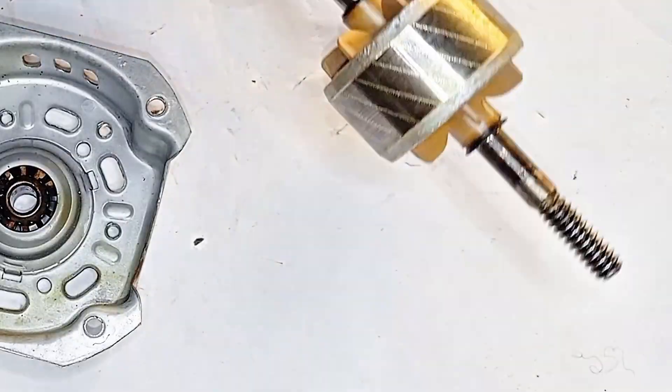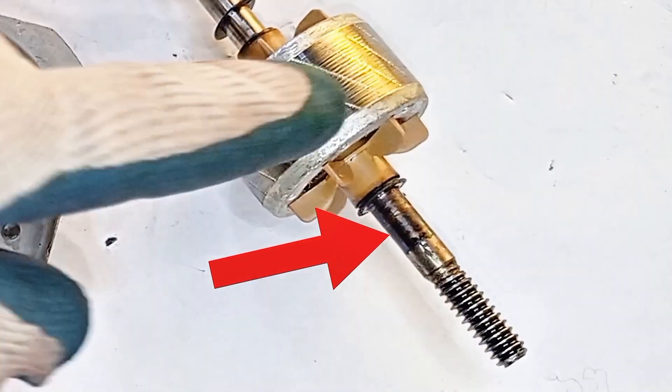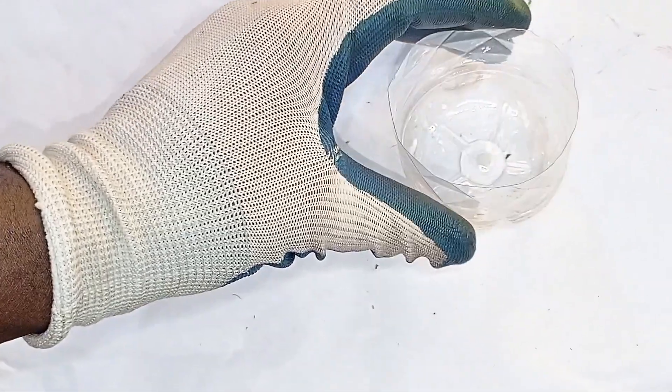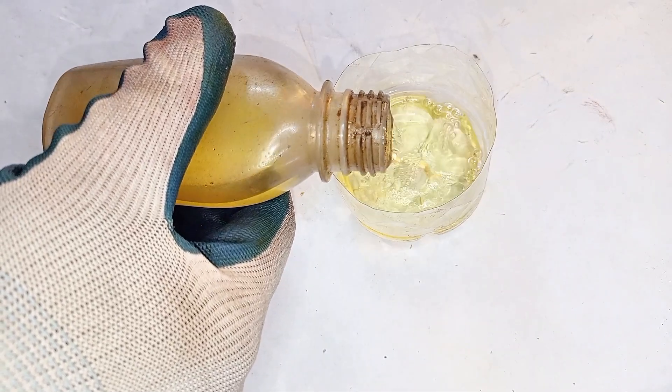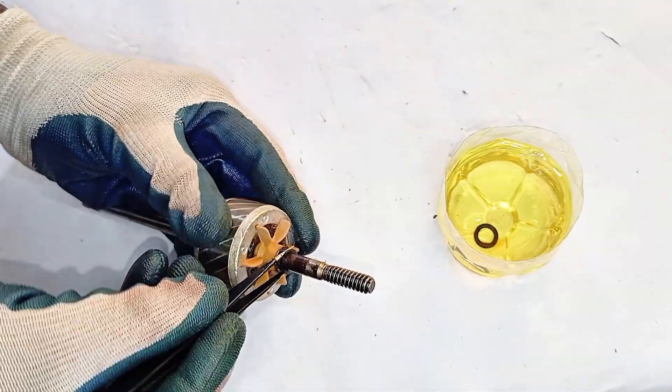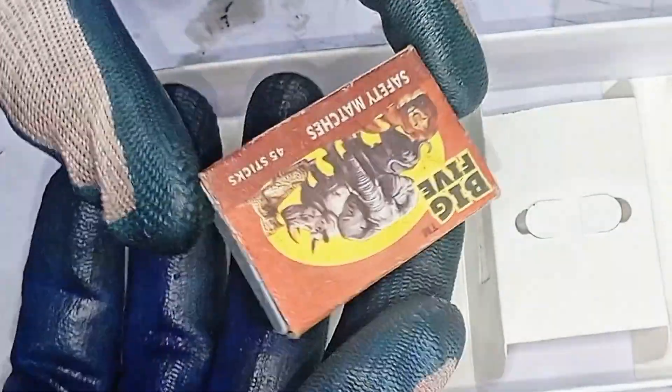We're not done yet. Look closely at that shaft. See that grime? That could be our next suspect. Reason number four: dirt and debris, silent troublemakers causing friction and blocking movement. And to deal with it, we're not holding back—petrol, a trusty toothbrush, and something else hidden in this little box.